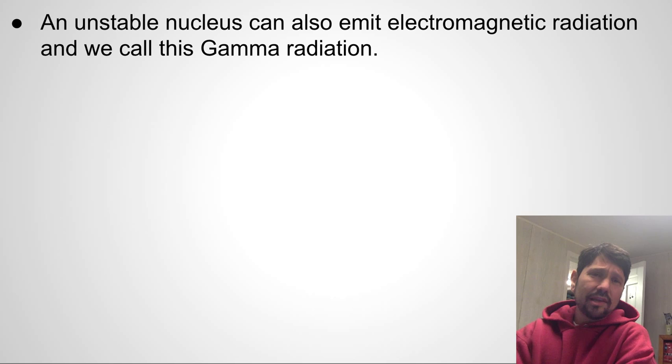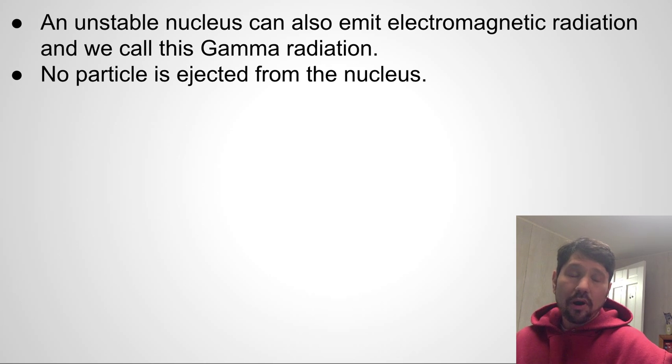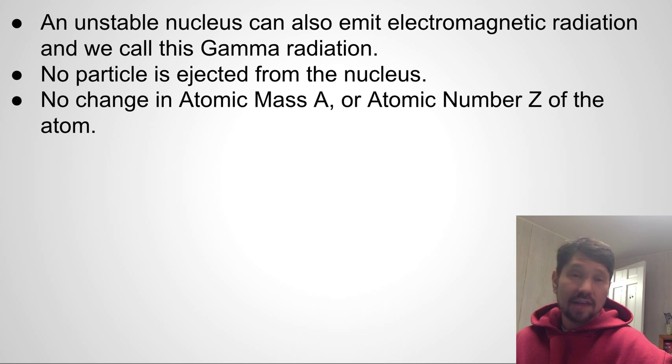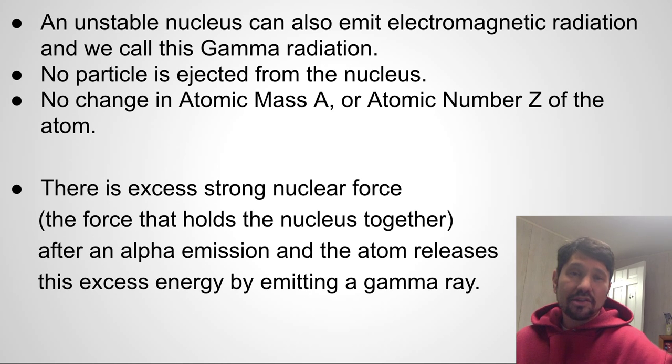An unstable nucleus can also emit electromagnetic radiation, and we call this gamma radiation. No particle is ejected from the nucleus in this form of decay, therefore no change in atomic mass and no change in atomic number. There's often excess strong nuclear force, which is the force that holds the nucleus together after a very unstable nucleus emits an alpha emission. And that atom releases this excess energy after that alpha emission by emitting a gamma ray.